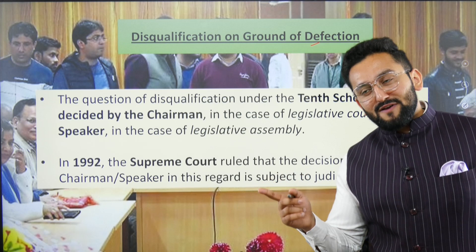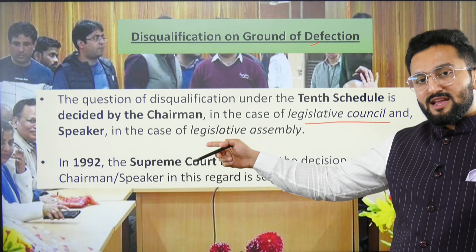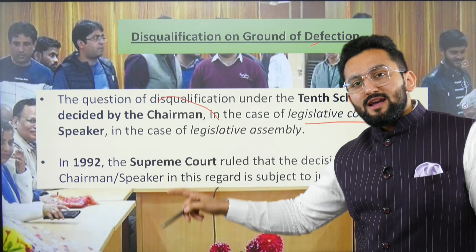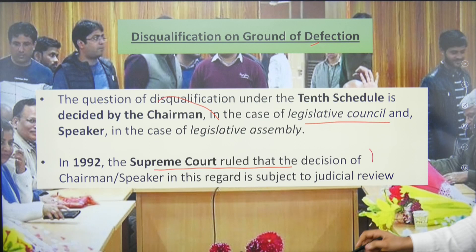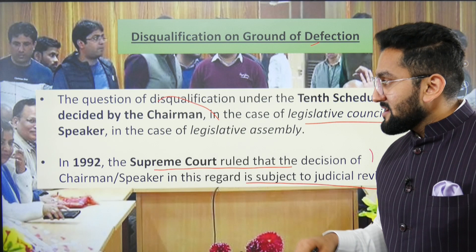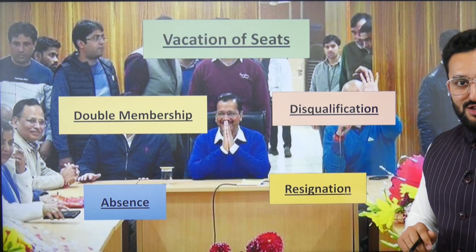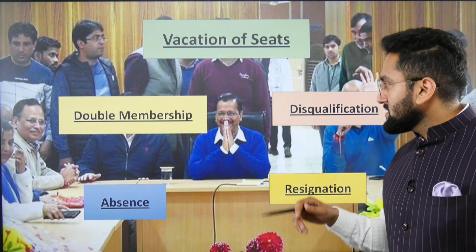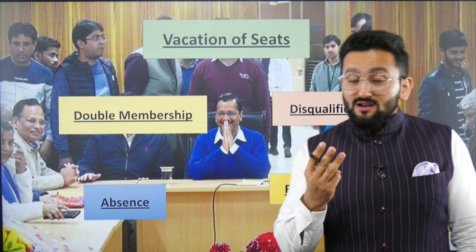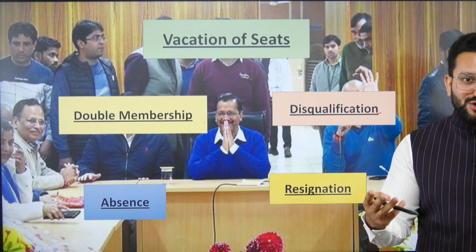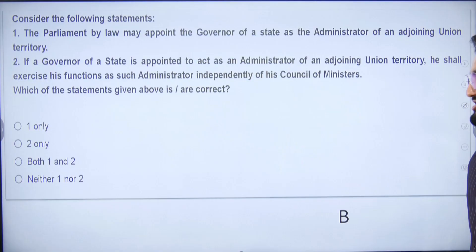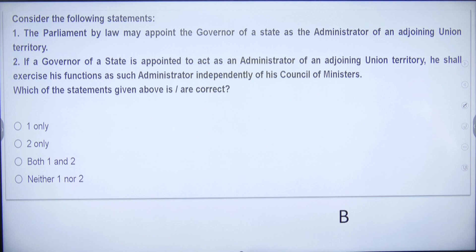Importantly, detention under preventive detention law is not a disqualification — this can be a trap question. Other disqualifications include being a director or managing agent in a company where the government holds at least 25% shares, or being dismissed from government service for corruption or disloyalty. On the anti-defection law (10th Schedule): in case of the legislative council, the chairman decides disqualification; in case of the legislative assembly, it is the speaker. The Supreme Court ruled these decisions are subject to judicial review.